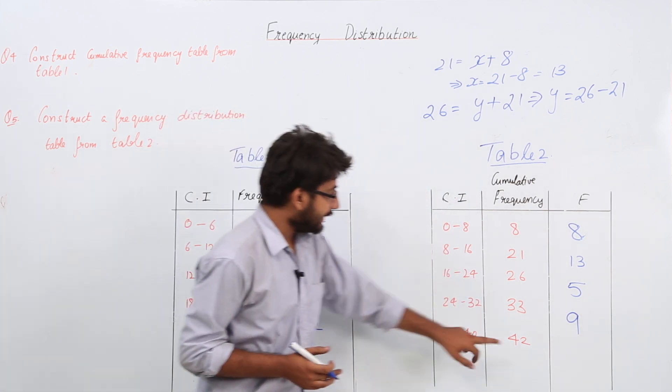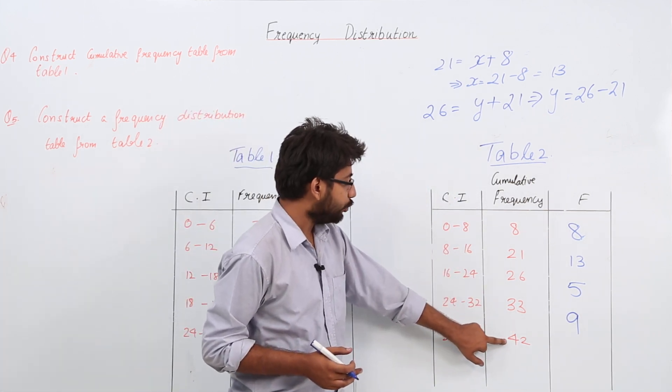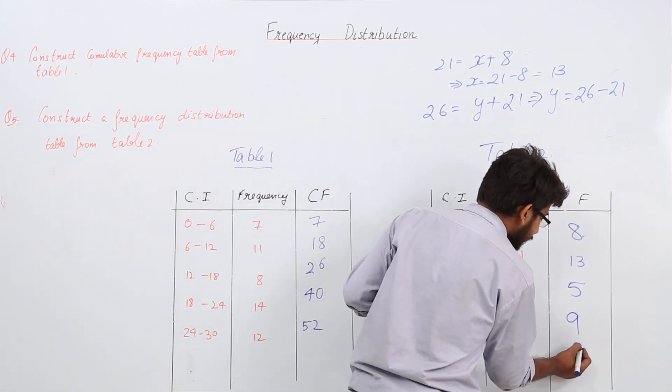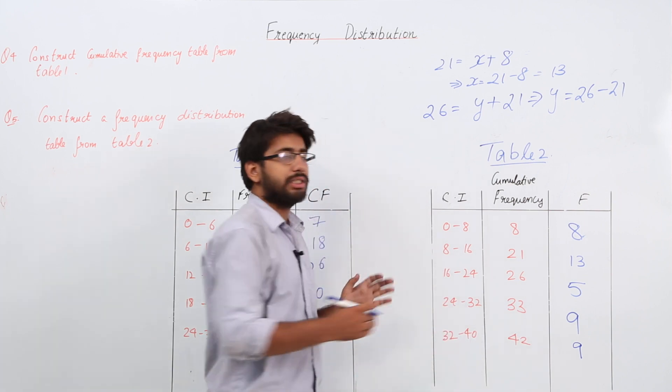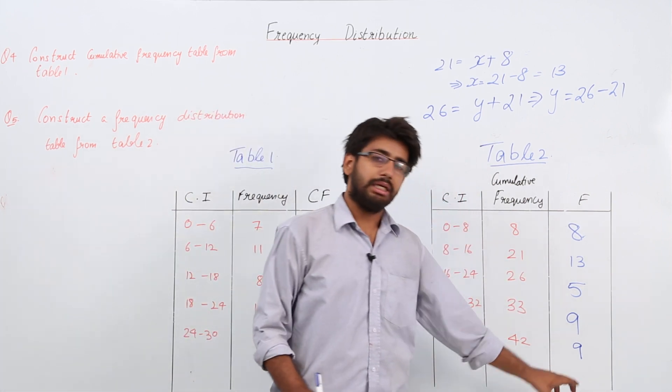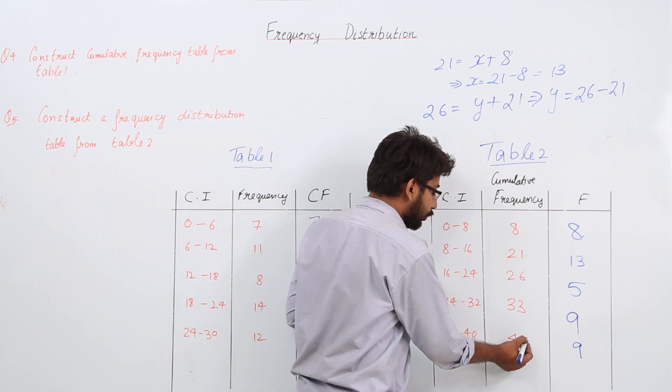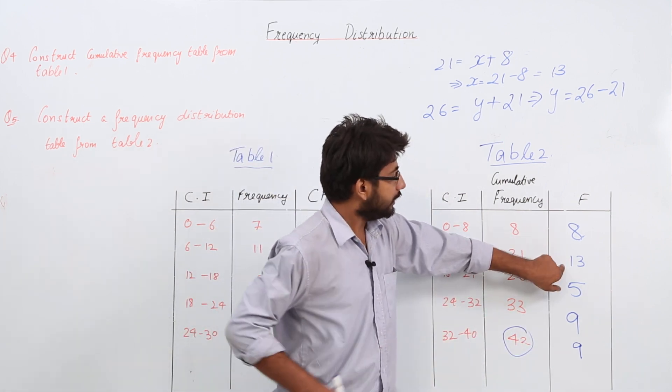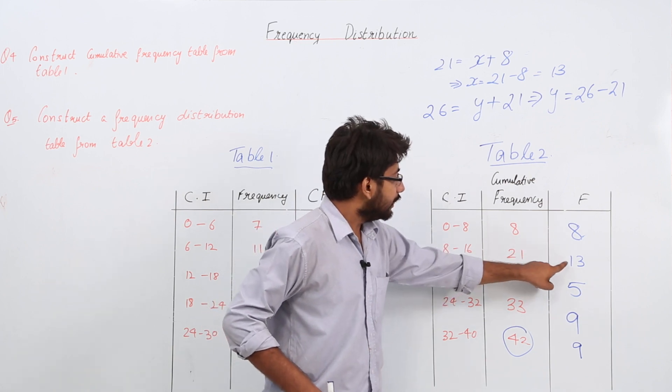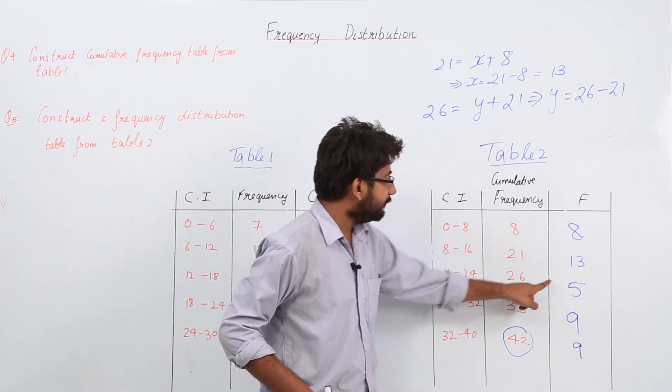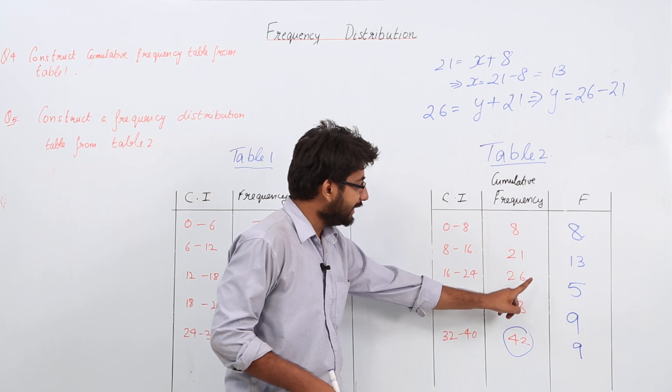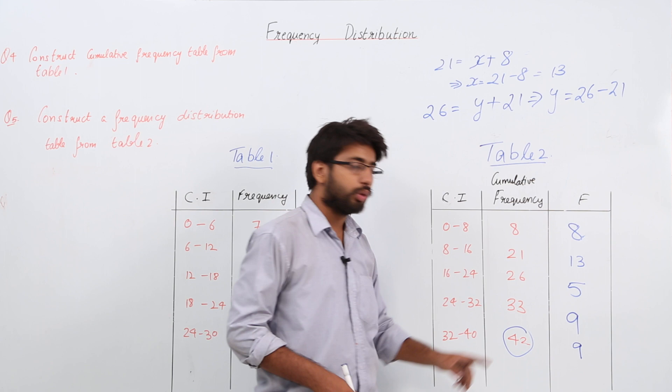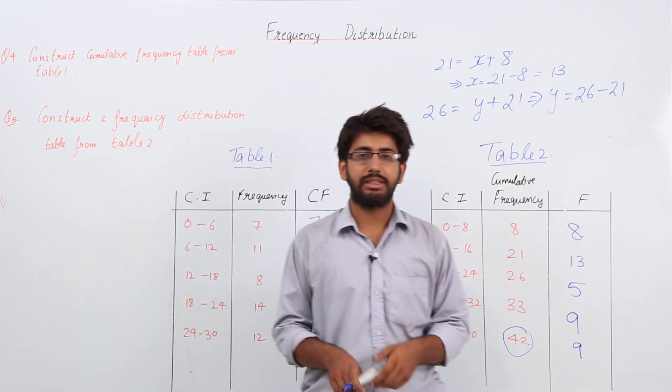In the next case, you have to subtract 42 minus 33. So again, the answer is 9. How do we check the answer is correct? When you add all the frequencies, the answer should equal the last cumulative frequency, which is 42. Let's check: 8 plus 13 equals 21, 21 plus 5 equals 26, 26 plus 9 equals 33, and 33 plus 9 equals 42. So yes, our answer is correct.